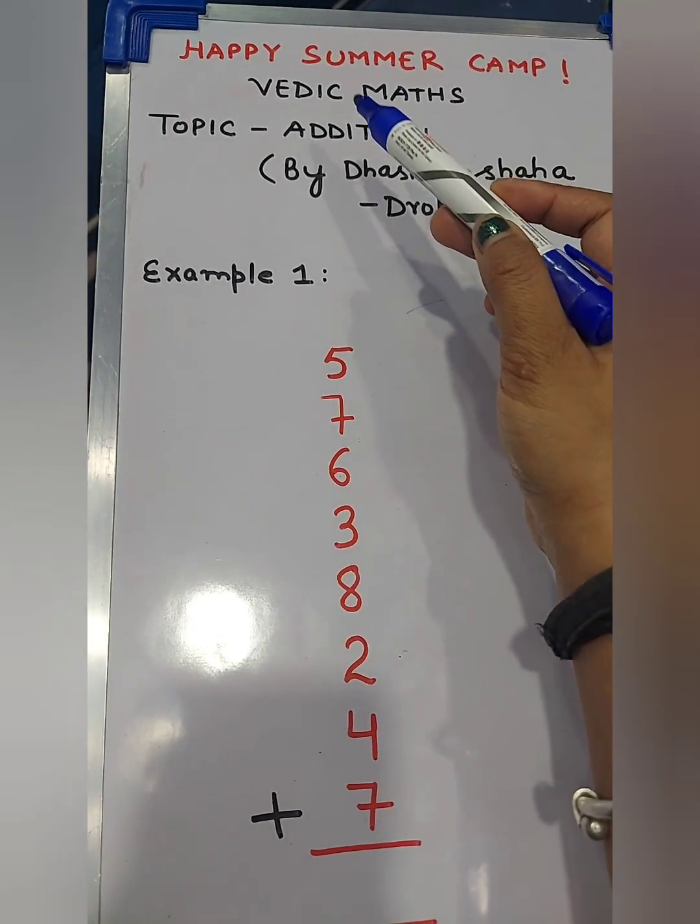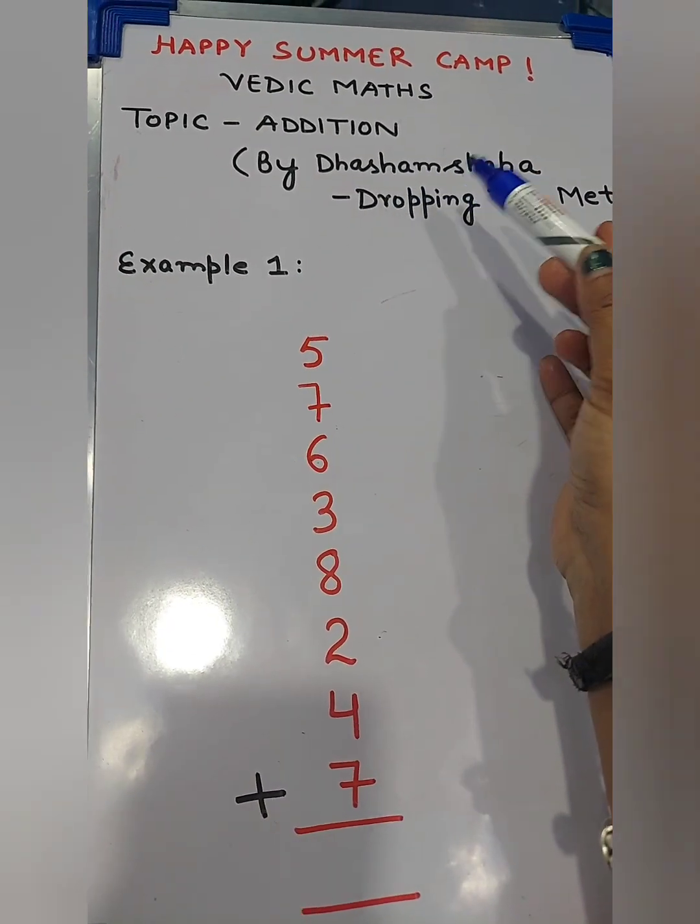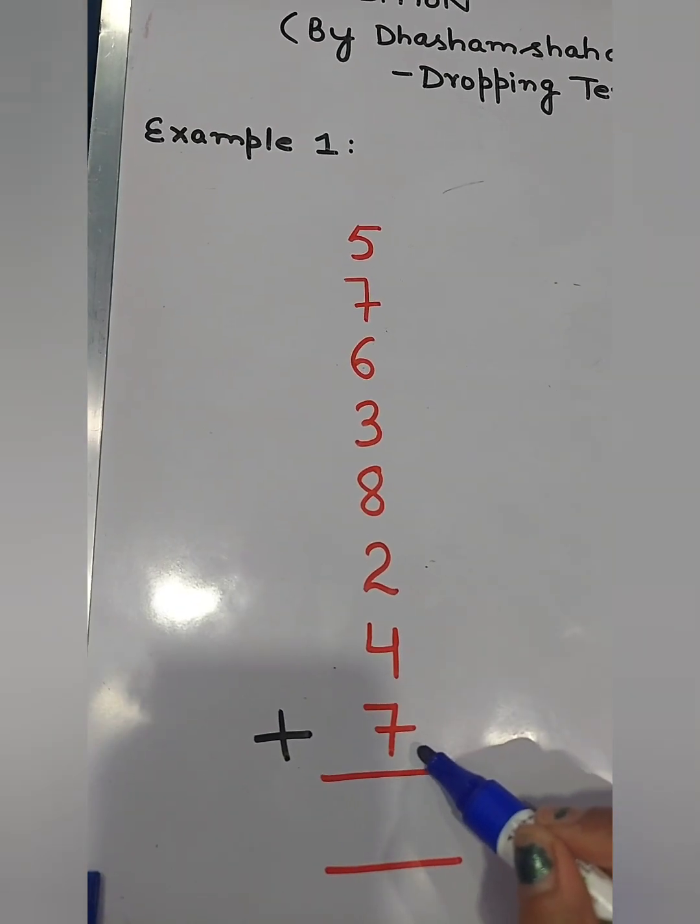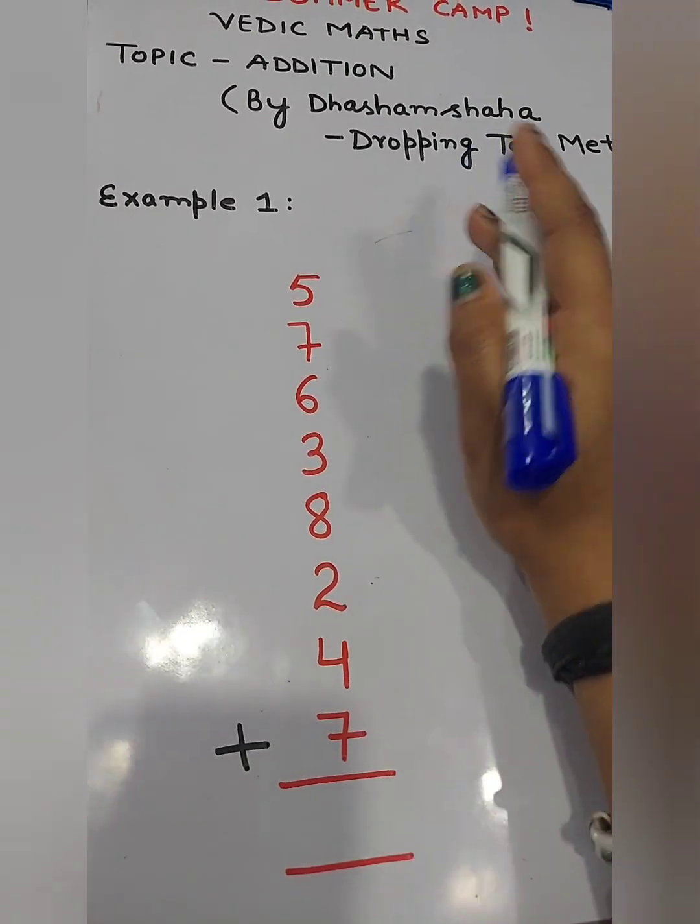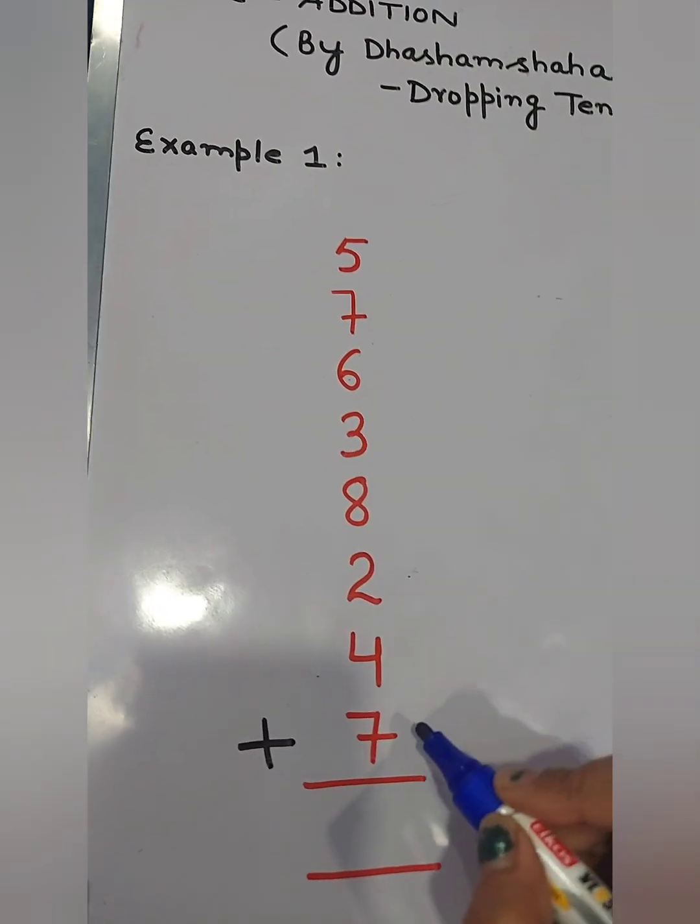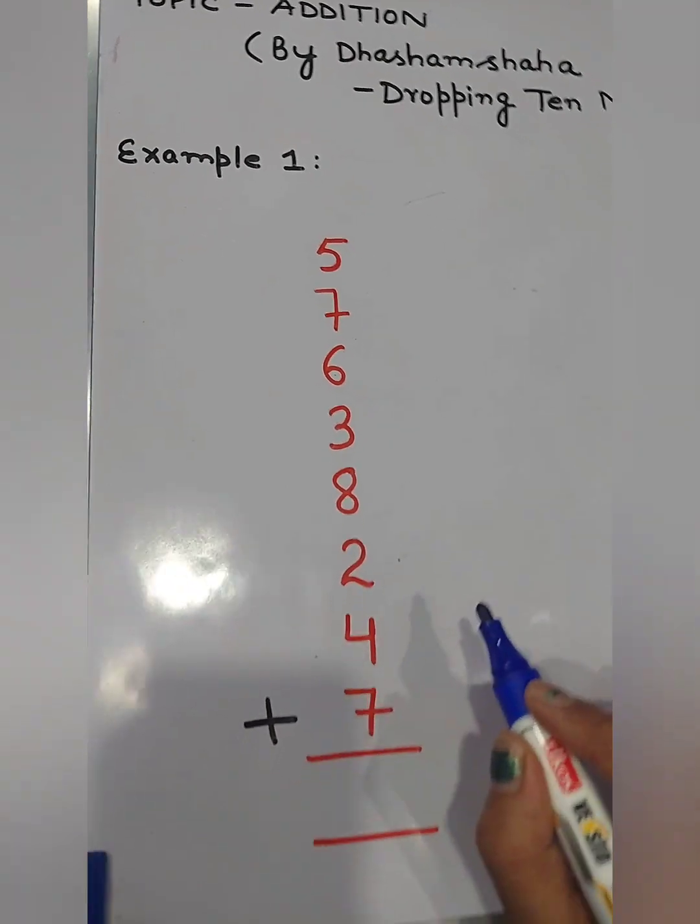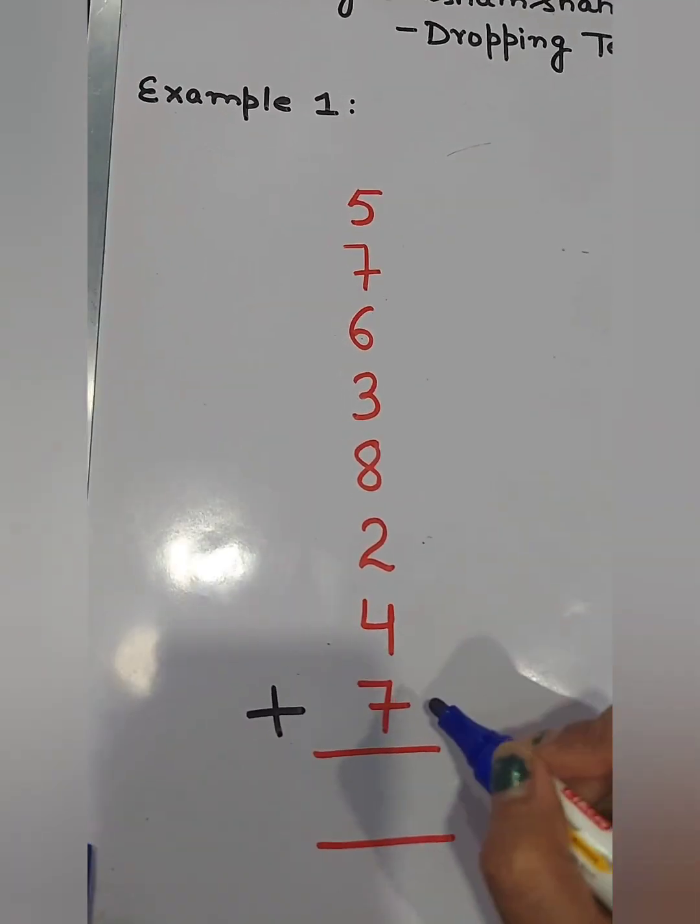But we have to follow Vedic Mathematics. So what is Dasham Shaha method? We start from here, from bottom of the number. And we know drop 10 means 10 को छोड़ देना है. Jahaan-jahaan हमें 10 मिलेगा या 10 से above number, हम 10 को वहाँ drop करते चलेंगे, means 10 को वहाँ छोड़ देंगे, बाद में calculate करेंगे.